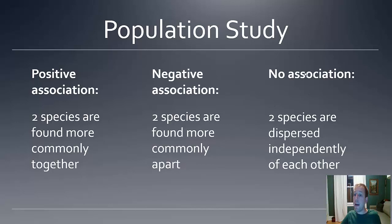It's also possible that two species have no association, meaning that it's fairly random. They're dispersed independently of each other, and so they neither really support nor hurt the presence of each other, and so their presence together is fairly random.